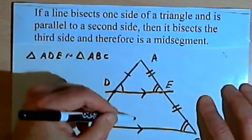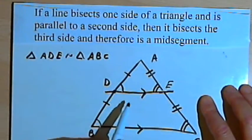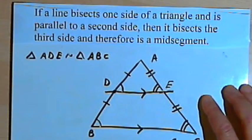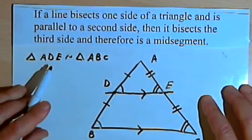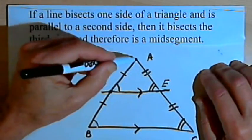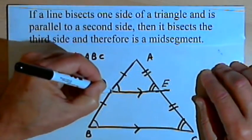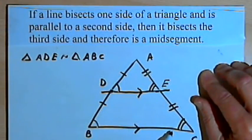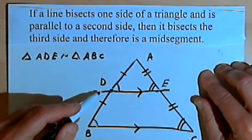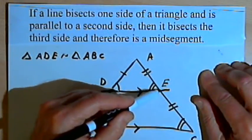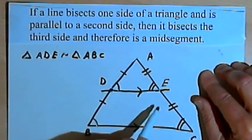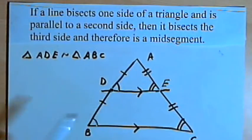We can also say that DE must be half as long as BC from what we learned with the mid-segment theorem. So once again, this theorem says that if I've only got one midpoint but I've got a line that's parallel to a second side, that line is going to intersect the third side at its midpoint, and therefore bisect that side and form a mid-segment. Okay, so that's it. Take care, I'll see you next time.